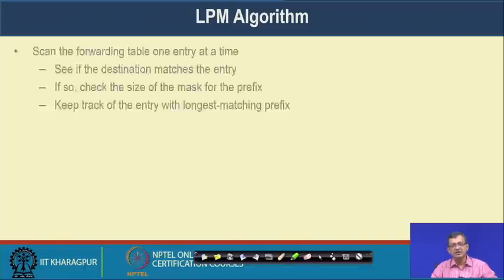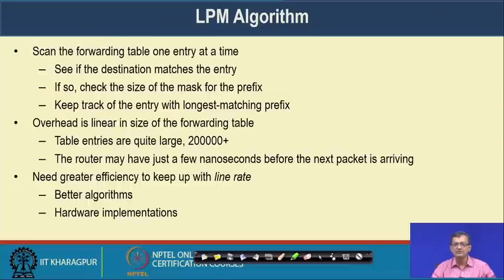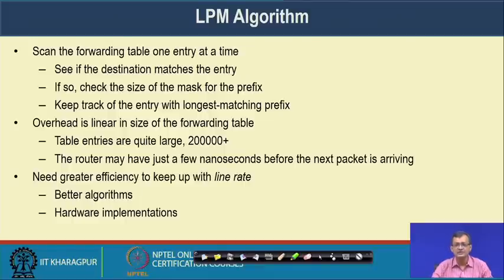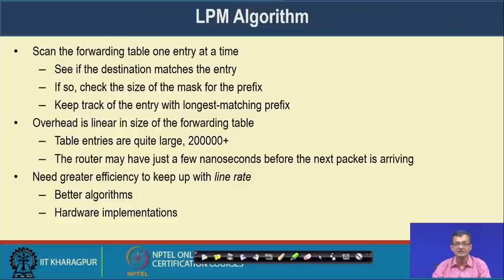The longest prefix match algorithm can be a major challenge. The router may have a huge number of entries, and scanning the forwarding table one entry at a time could take too long. There can be 2–3 lakh entries, and linear-time lookup is infeasible when packets arrive every nanosecond. We need better algorithms for finding the longest prefix match. These days this is handled in hardware.